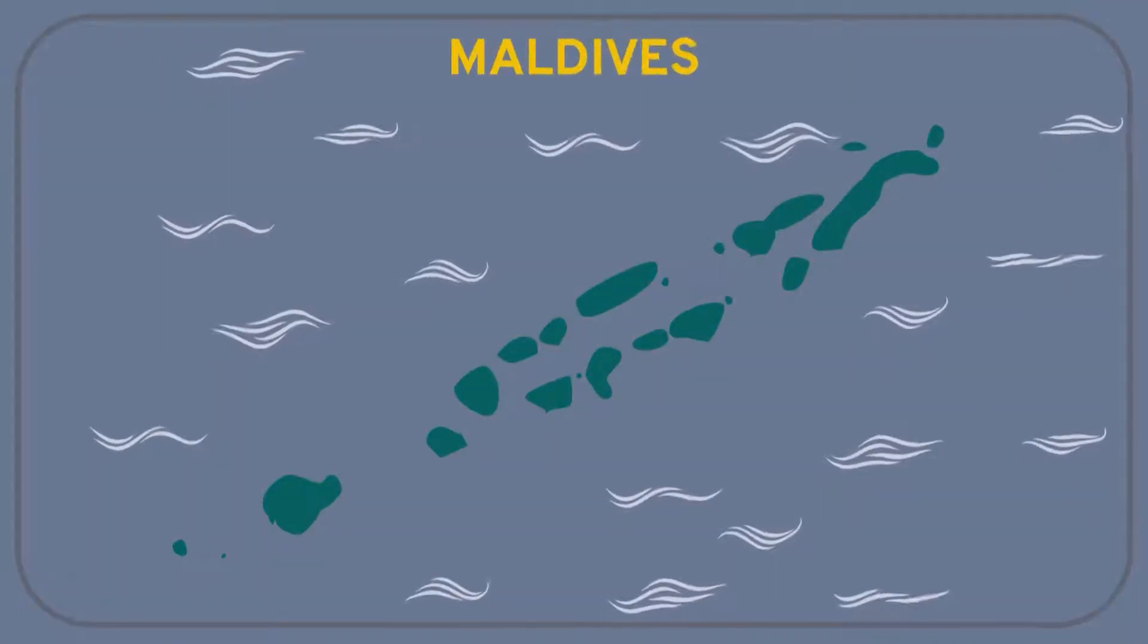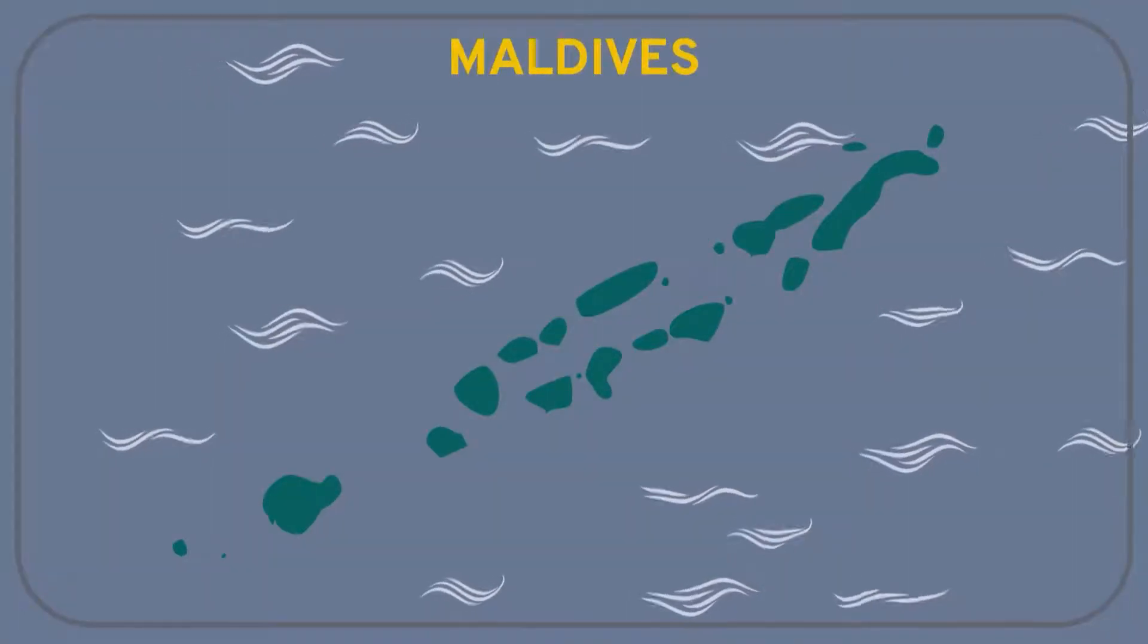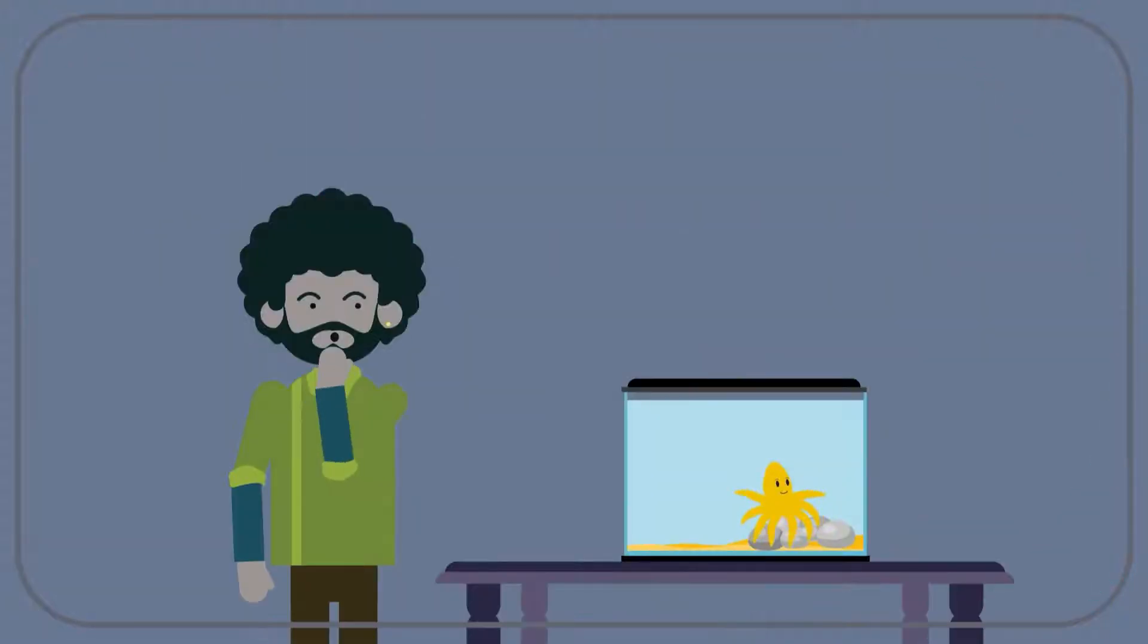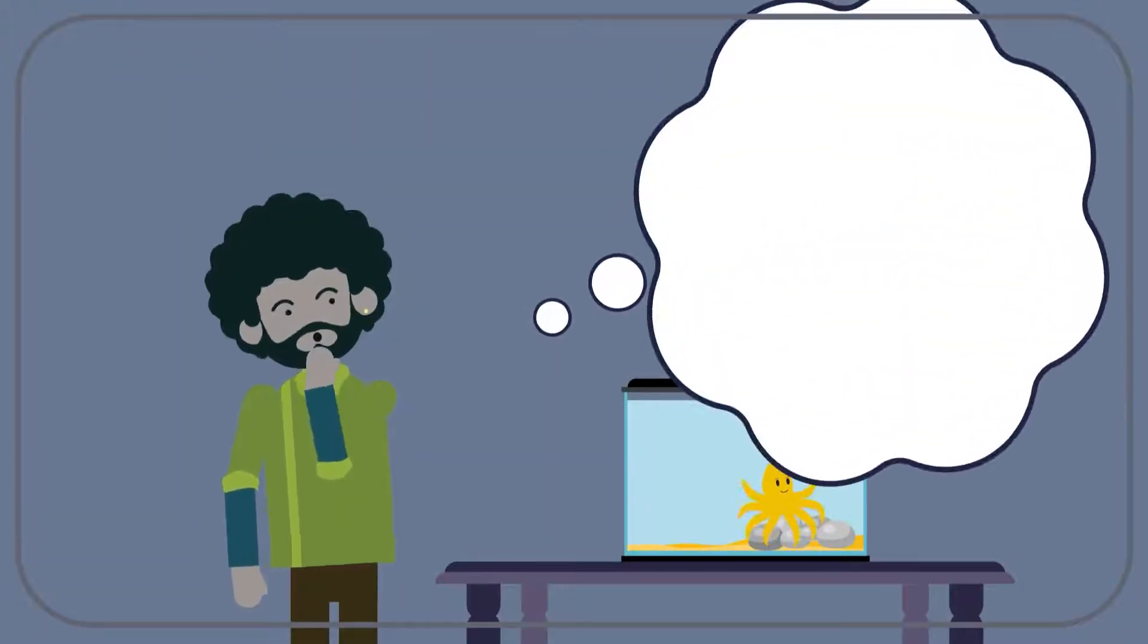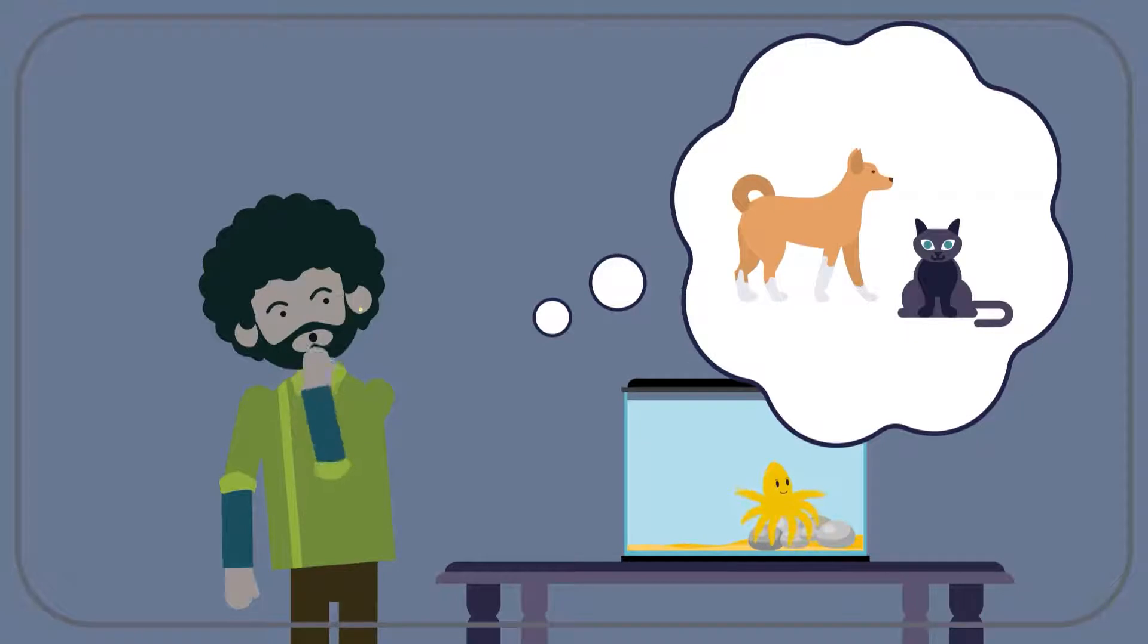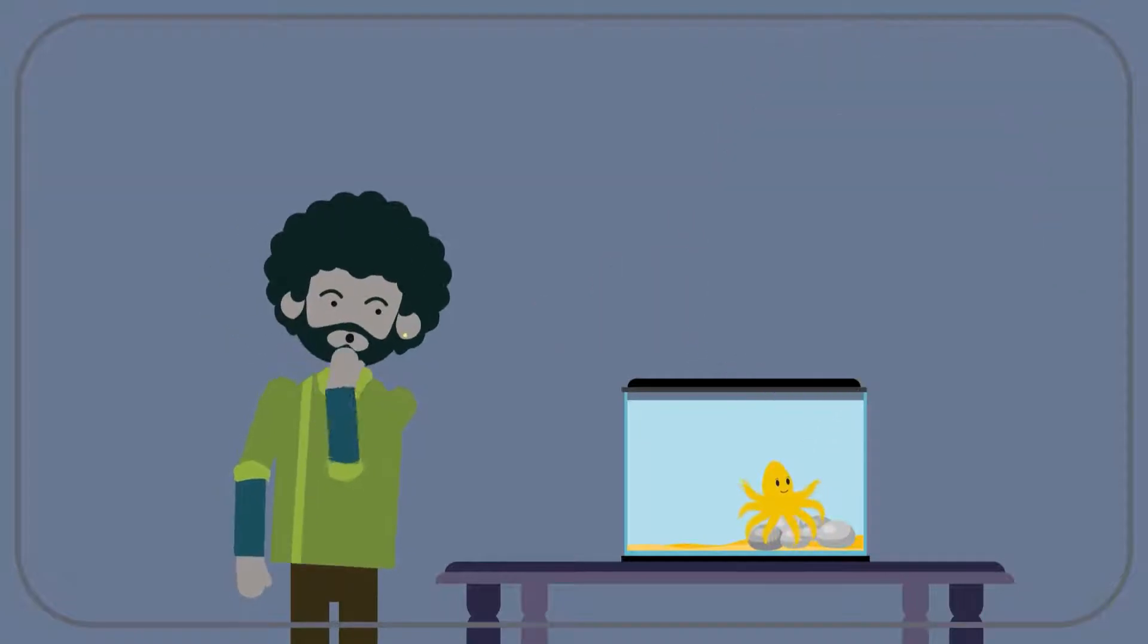Rami grew up in the Maldives, a nation made of a thousand or so islands in the Indian Ocean. When you grow up on a small island, the usual kinds of pets like cats and dogs aren't always available, but he once had a baby octopus.